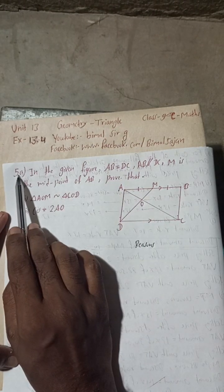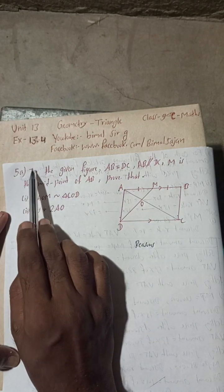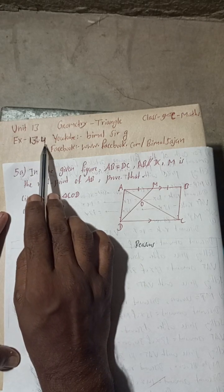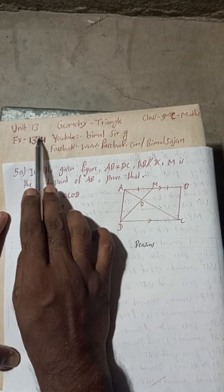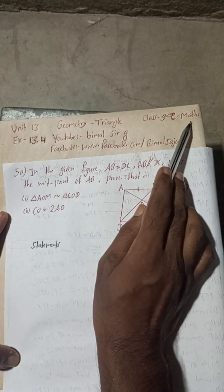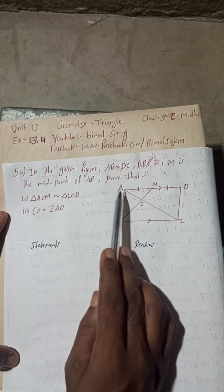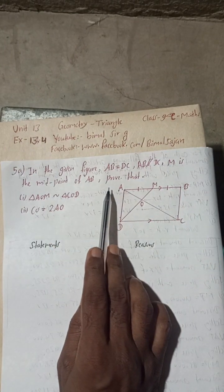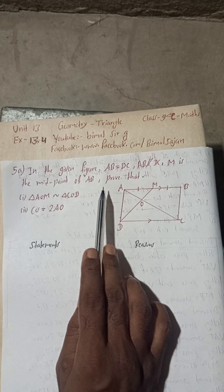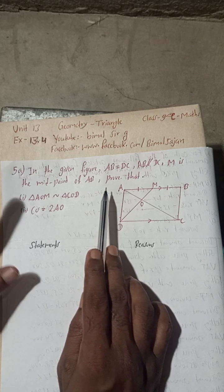This is question number 5a of exercise 13.4, unit 13, geometry triangle, class 9 compulsory maths. This is based on a demand from one of my YouTube subscribers to solve the geometry triangle parts.